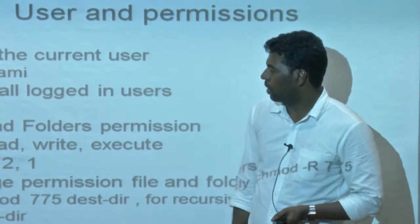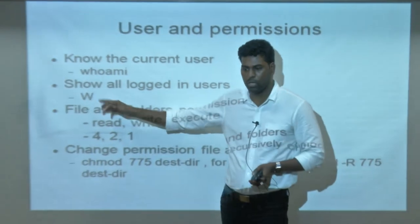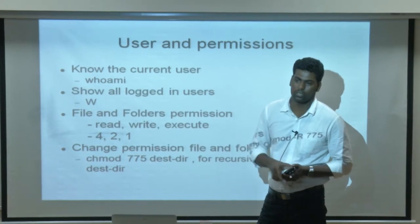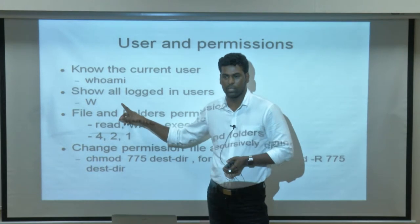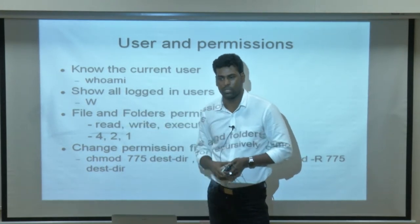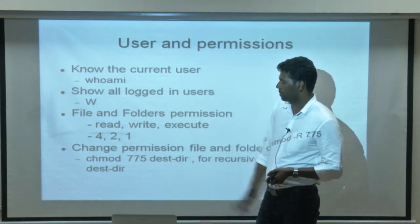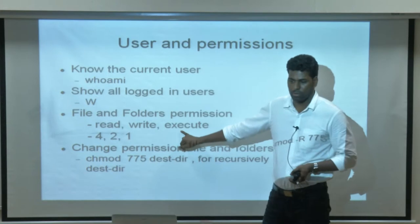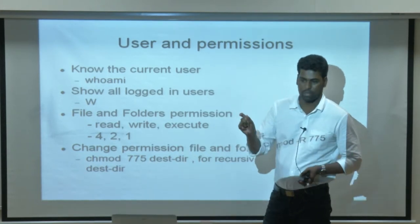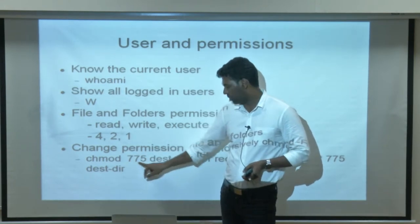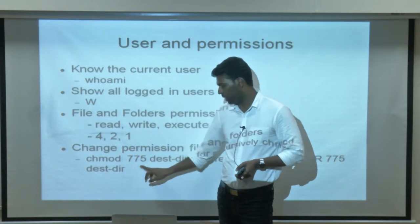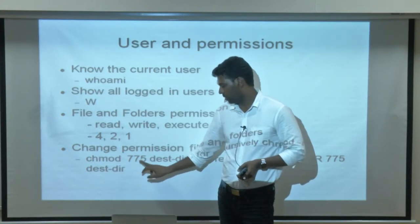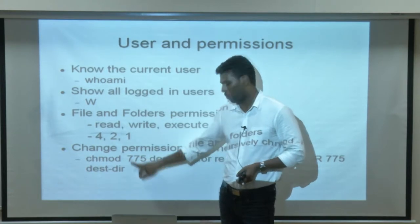To check logged-in users, there is the last command. If you type last, it displays the history of what has been done on the terminal. For file and folder permissions, use chmod. For example, chmod 775 means: read, write, execute for the owner; read, write, execute for the group; and read for others — representing owners, group, and others.